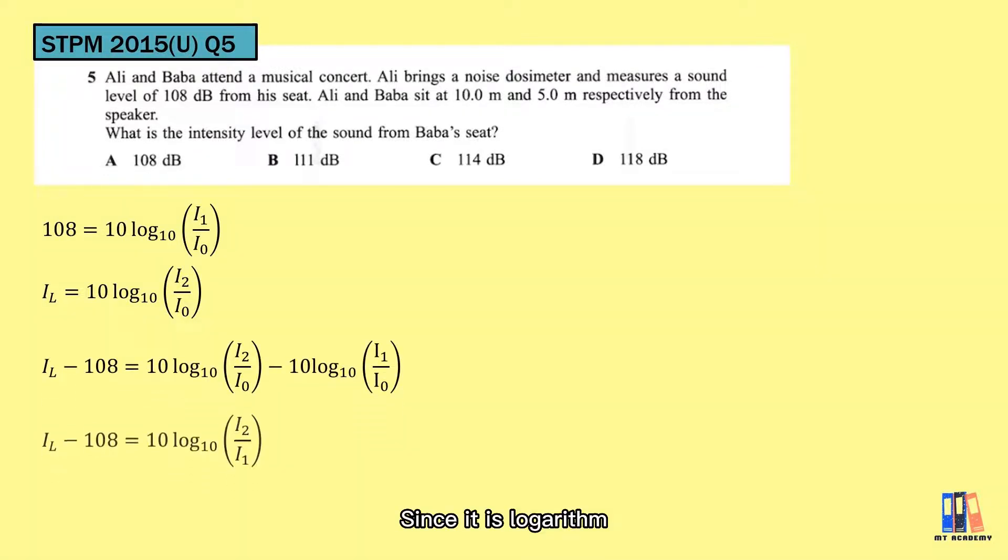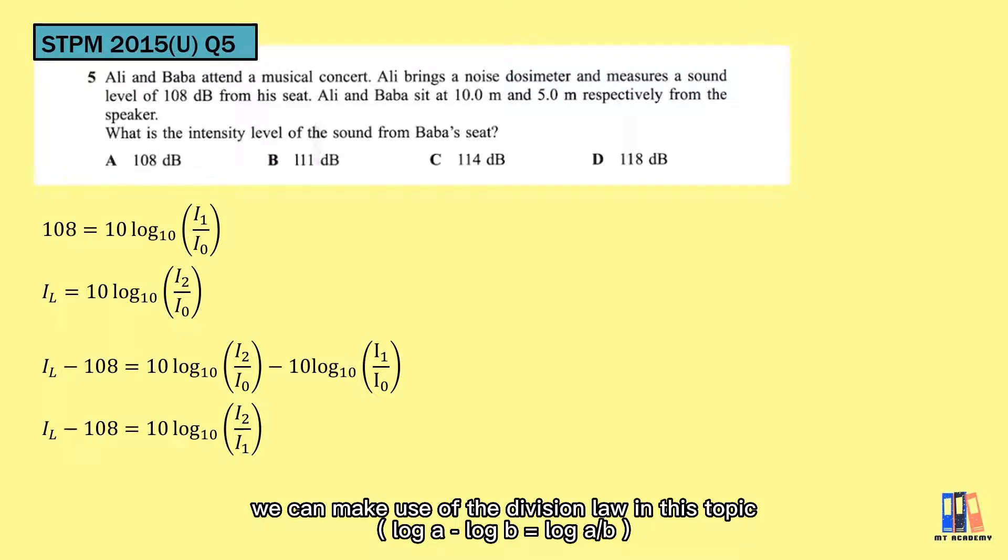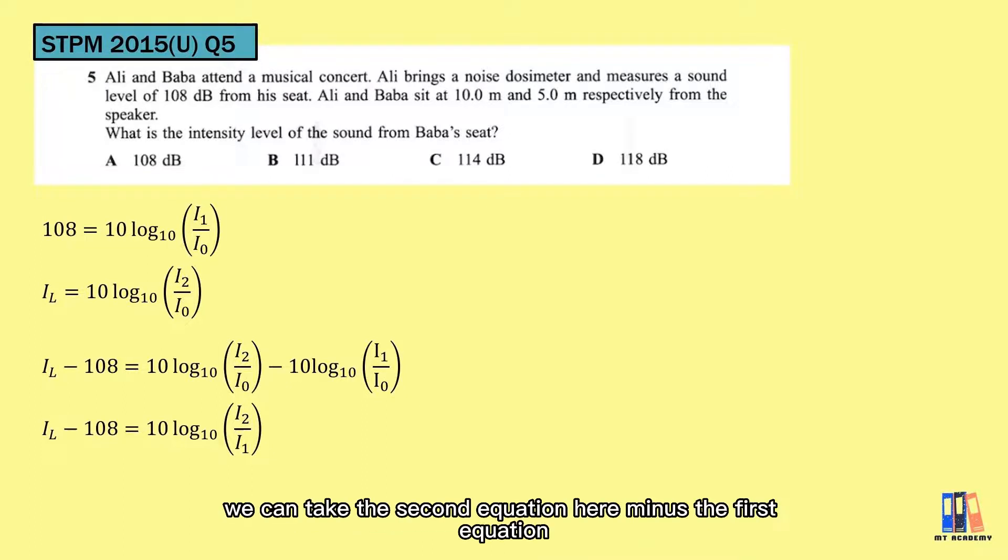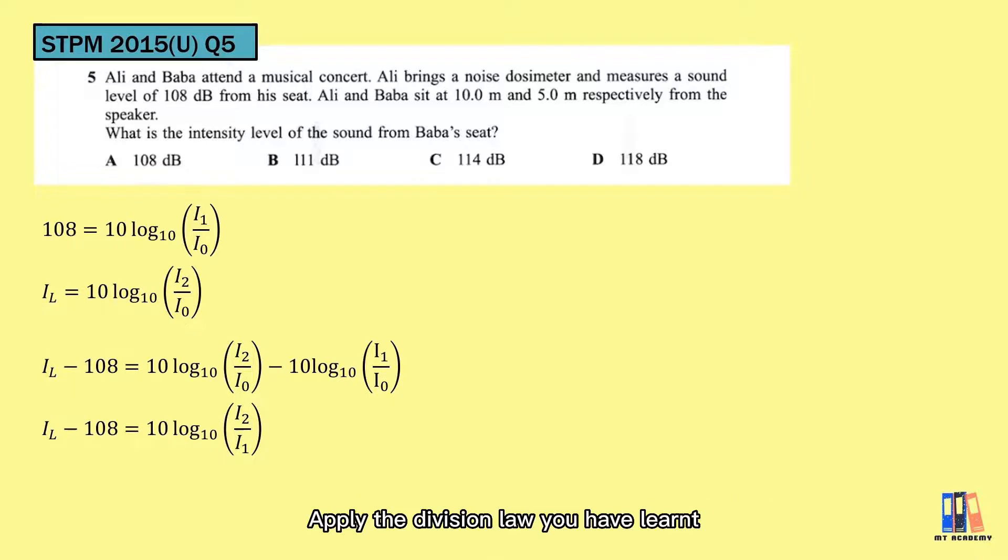It is expected that the sound intensity is higher when the distance is nearer, so we can take the second equation here minus the first equation. Apply the division law you have learned, and you can obtain the equation of I_L - 108 = 10 log₁₀(I₂/I₁).